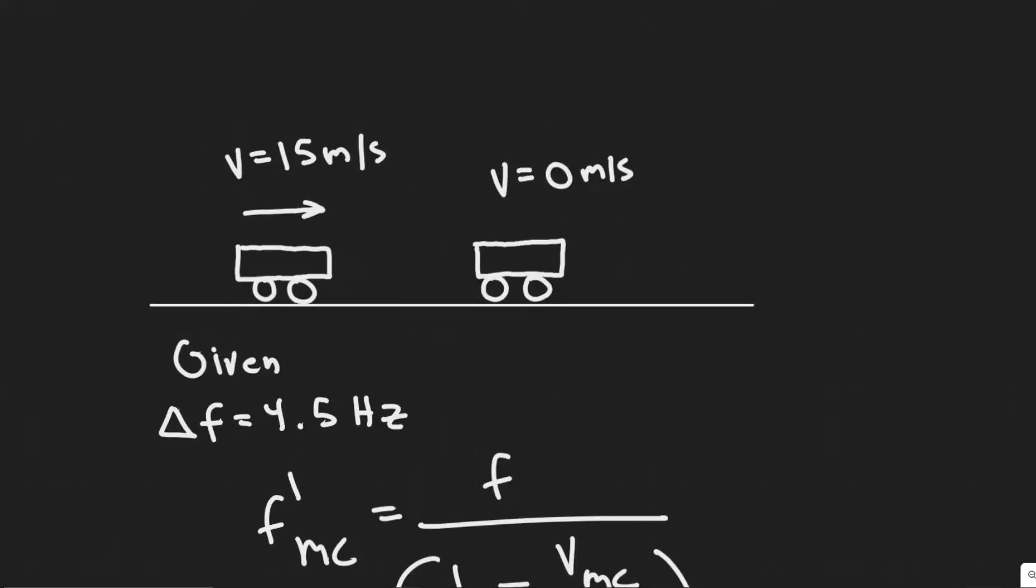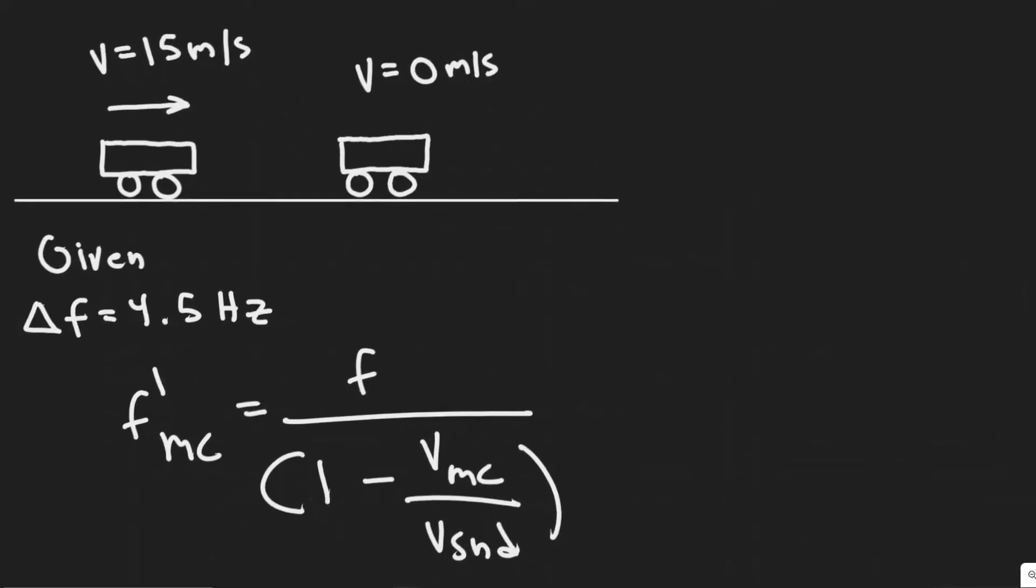In this problem we're told two automobiles are equipped with the same single frequency horn. When one is at rest and the other is moving toward the first at 15 meters per second, the driver at rest hears a beat frequency of 4.5 hertz. What is the frequency that the horns emit? Assume T equals 20 degrees Celsius.